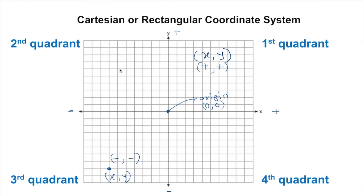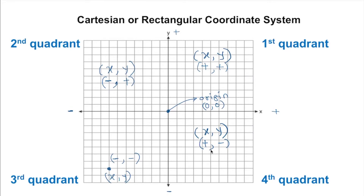Moving to the second quadrant — we always write x first, so x comma y. X to the left is negative, so we have a negative sign, comma y goes up which is positive. So the sign for quadrant two is negative, positive. For quadrant four: x to the right is positive, y is going down so y is negative — positive comma negative. Summary: quadrant one is all positive, quadrant two is negative positive, quadrant three is all negative, and quadrant four is positive negative.